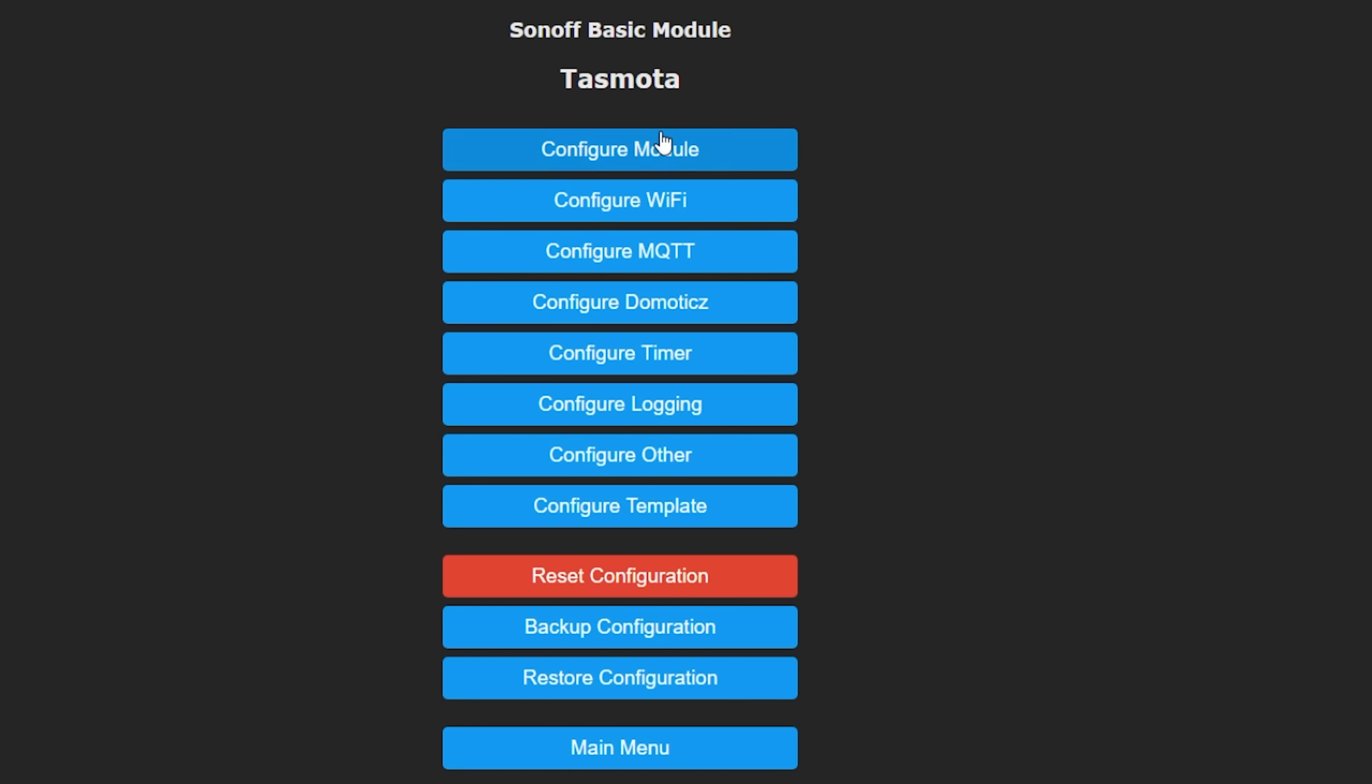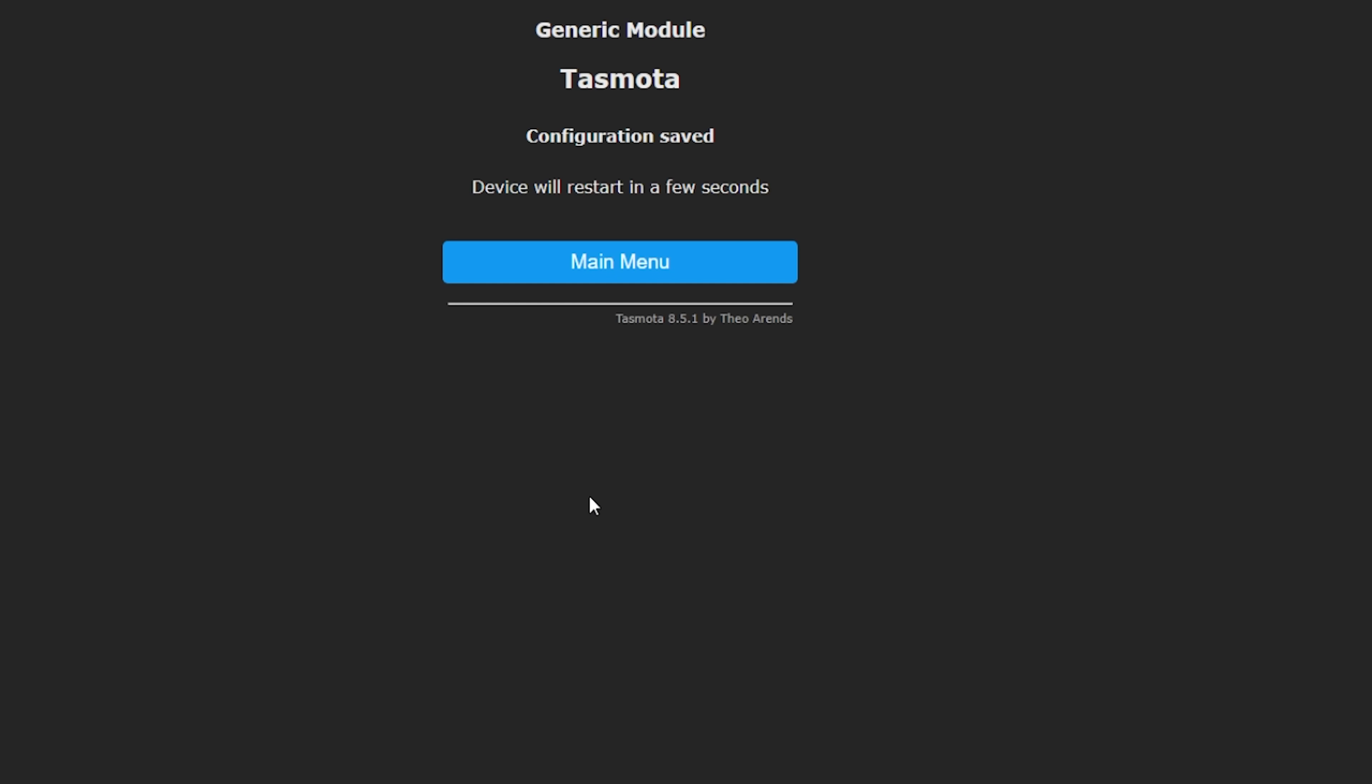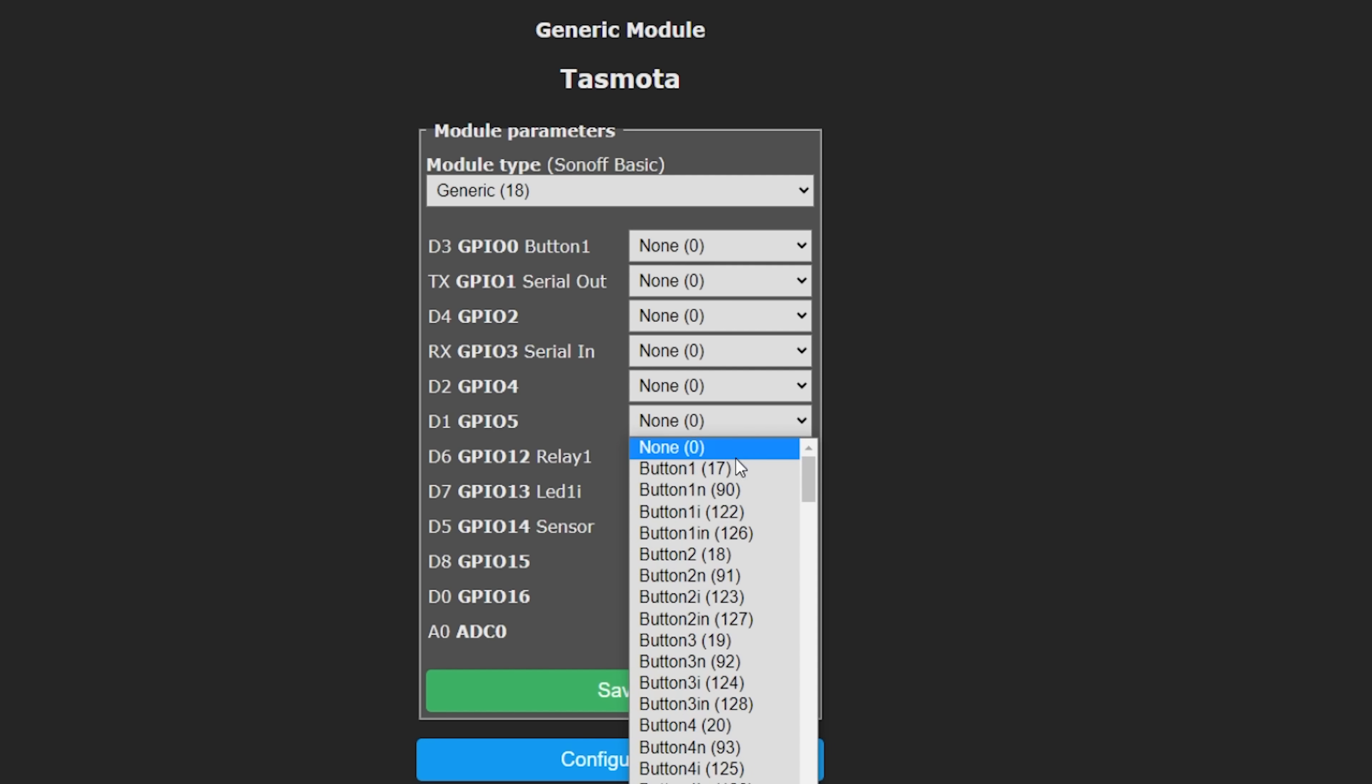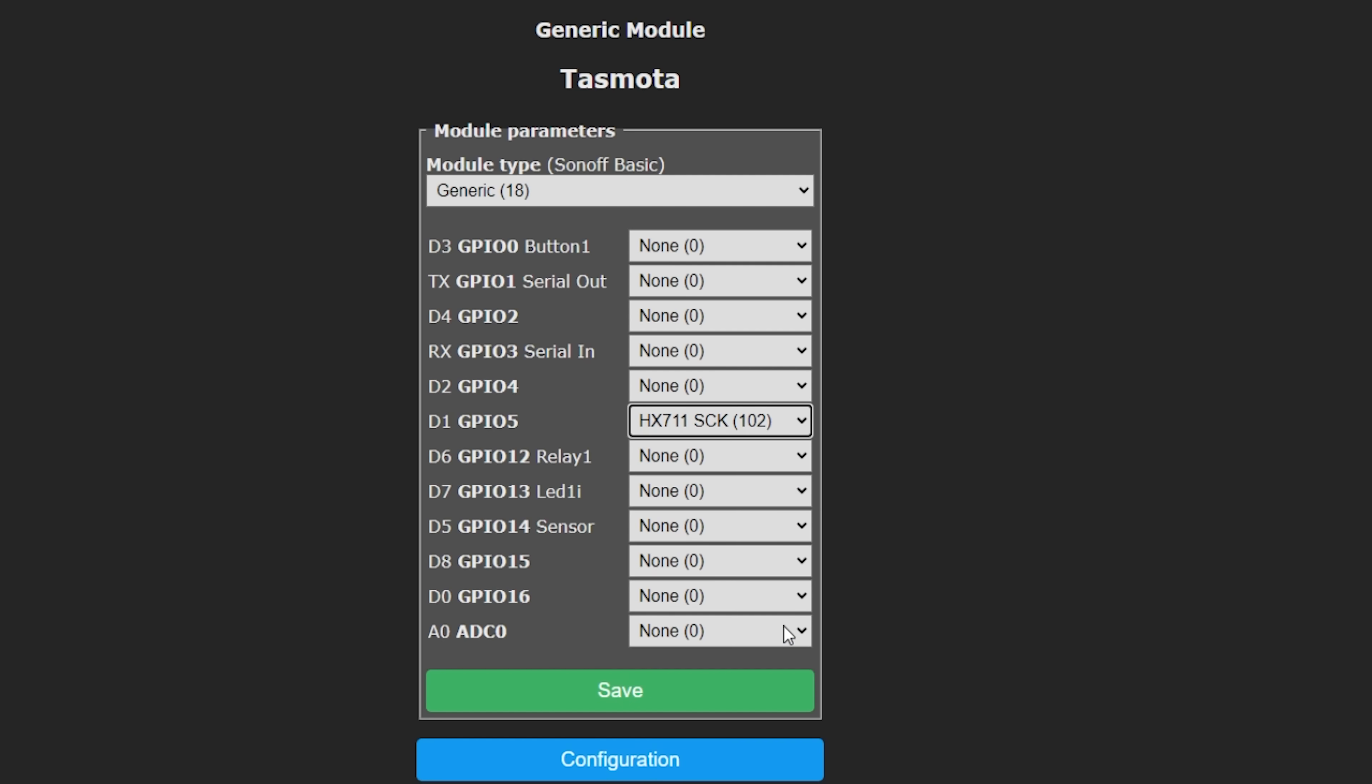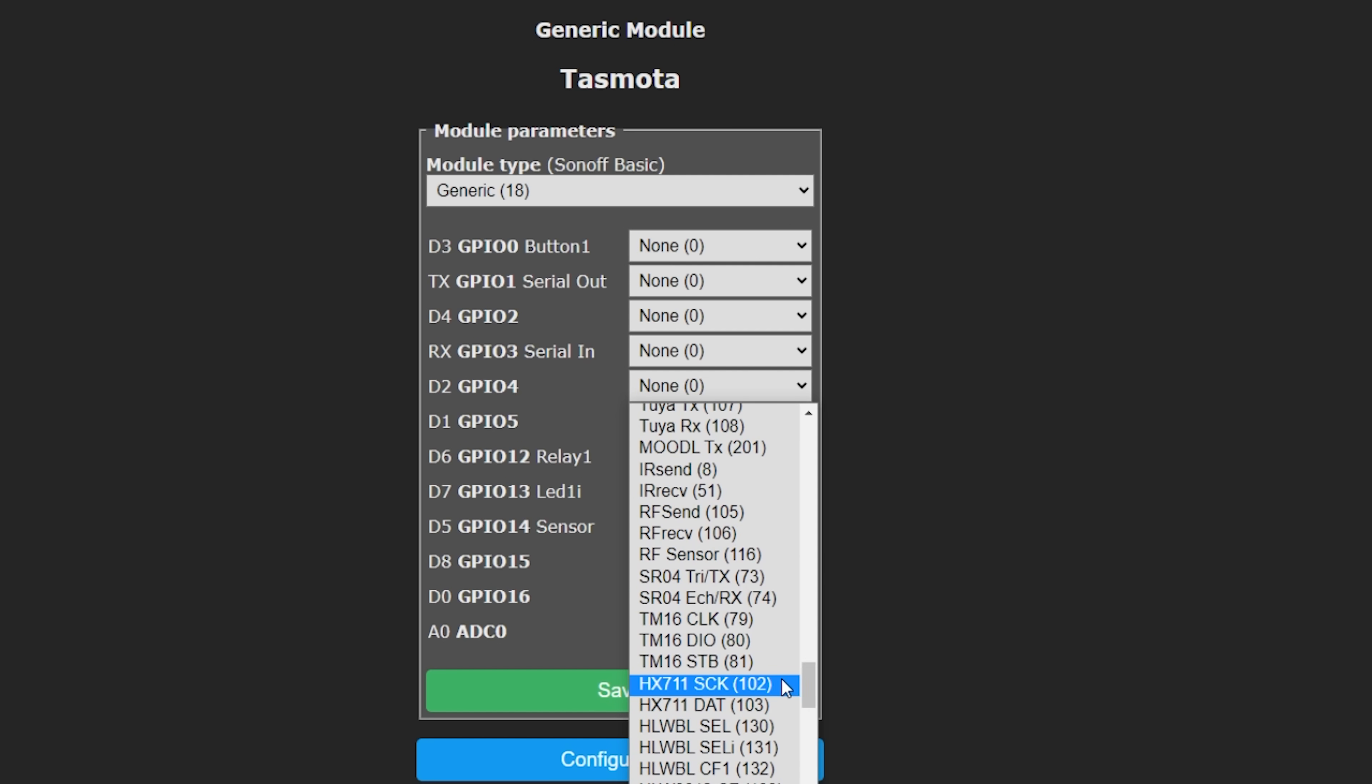Navigate to that IP address in your browser so you can get to the Tasmota web UI where you need to set up your new sensor. Click on configure, and then configure module and select generic, and that's probably going to cause your device to reboot. So you're going to repeat those steps to get back to the configure module screen where we can tell Tasmota that we plan on attaching an HX711 load cell amplifier. We'll need to set up a clock pin and a data pin, and I like to use D1 and D2 in my projects because they don't cause any boot issues. So select D1 for your clock pin or HX711SCK and D2 for your data pin or HX711DAT and then hit save.